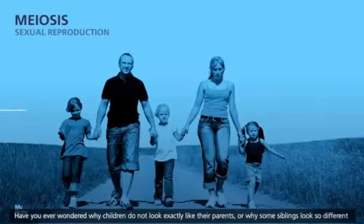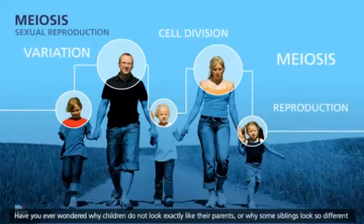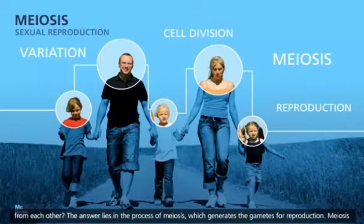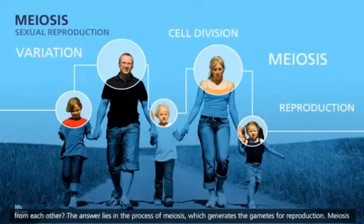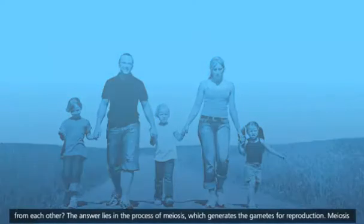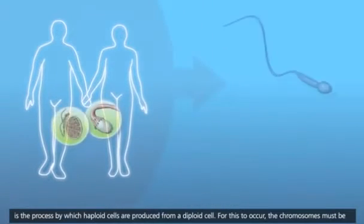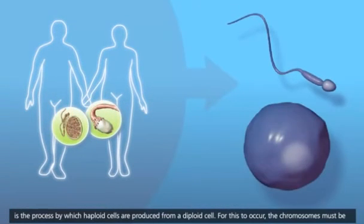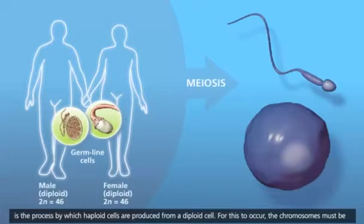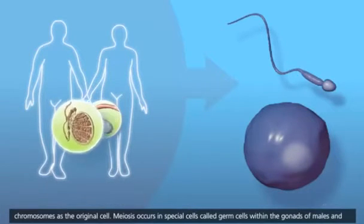Have you ever wondered why children do not look exactly like their parents, or why some siblings look so different from each other? The answer lies in the process of meiosis, which generates the gametes for reproduction. Meiosis is the process by which haploid cells are produced from a diploid cell. For this to occur, the chromosomes must be correctly sorted and distributed in a manner to create genetically unique cells with half the number of chromosomes as the original cell.